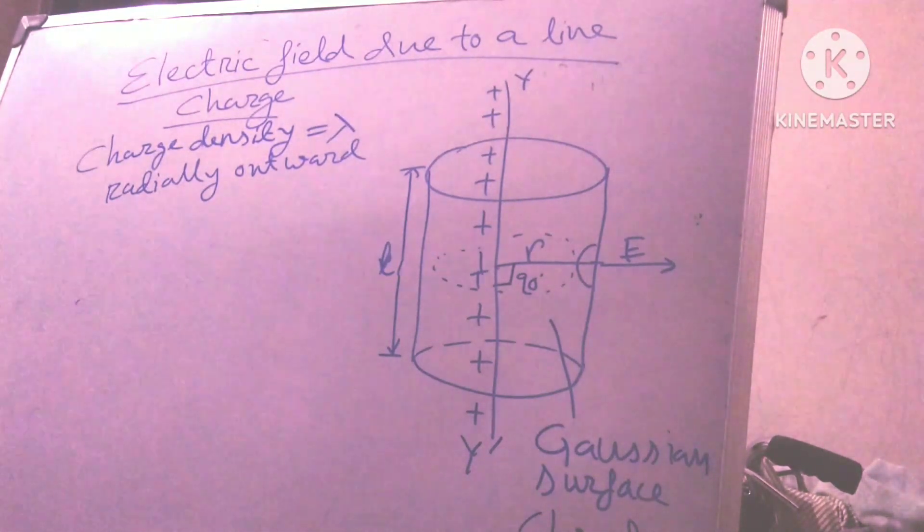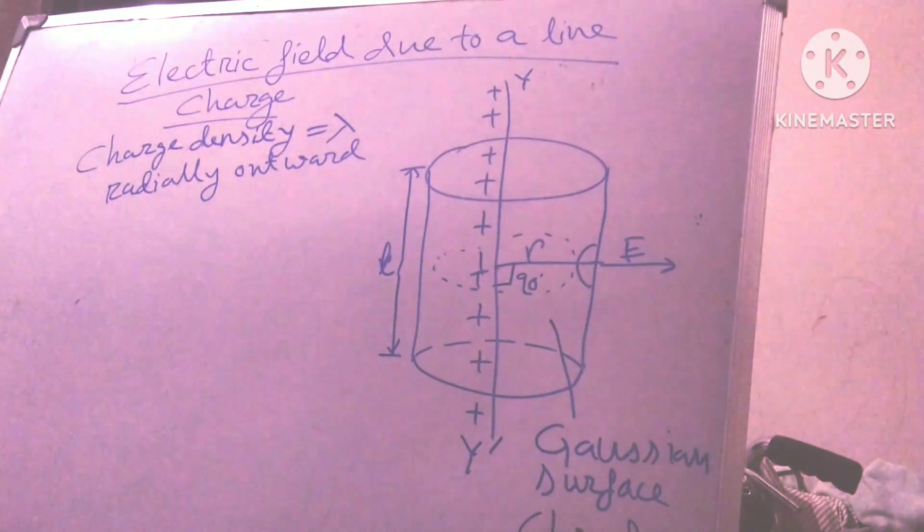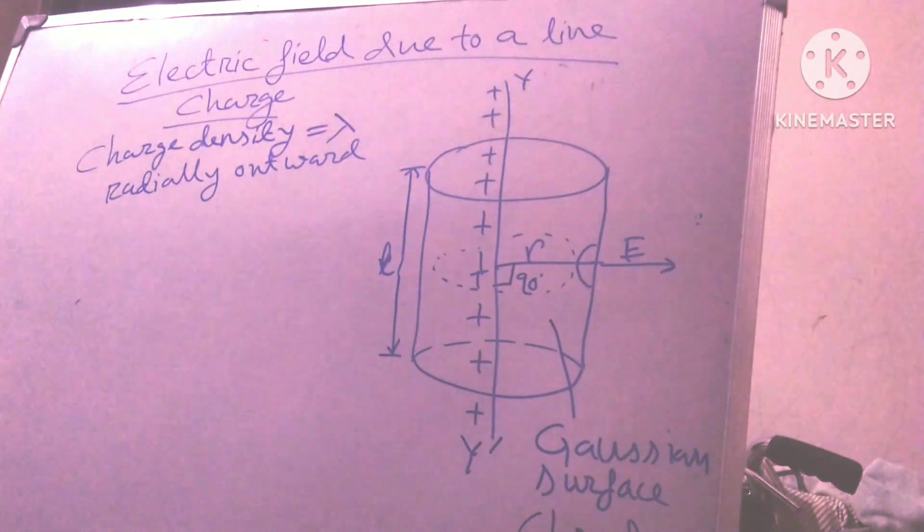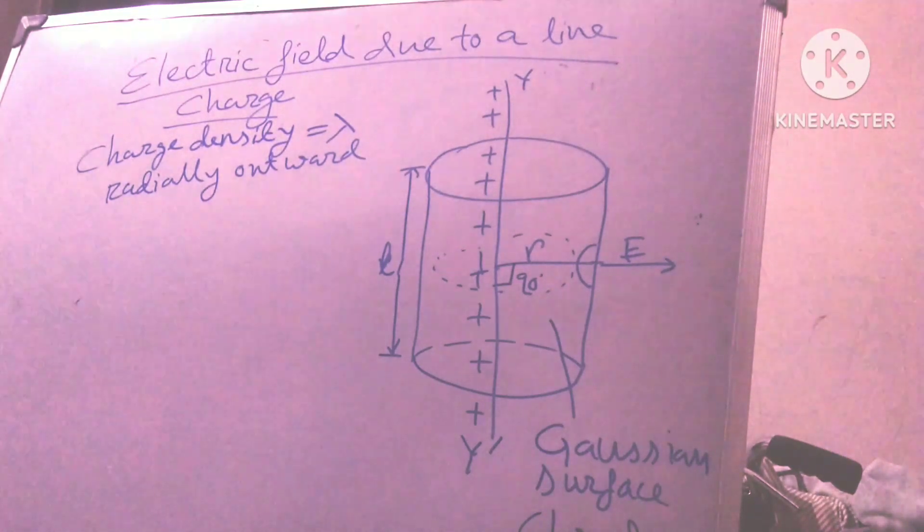And to find electric field due to line charge at point p distance r from it, draw a cylindrical surface of radius r and length l. My length is, this length is l. About the line charge as axis. This cylindrical surface may be treated as the Gaussian surface for the line charge.